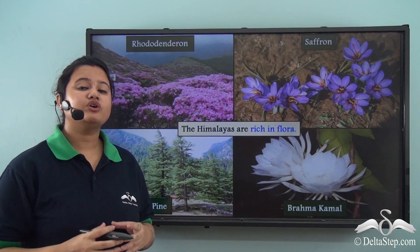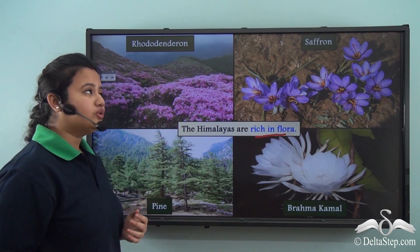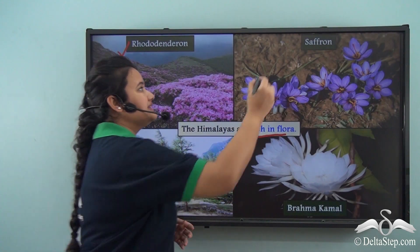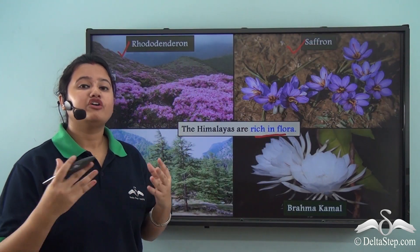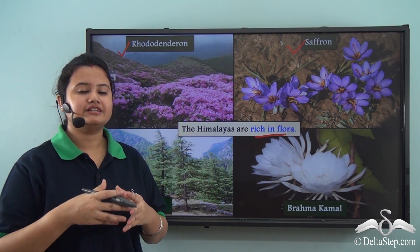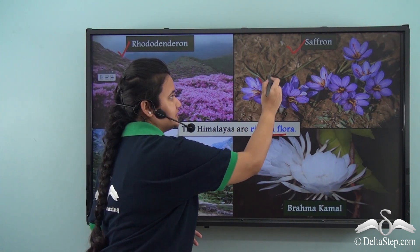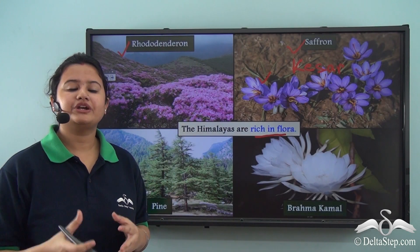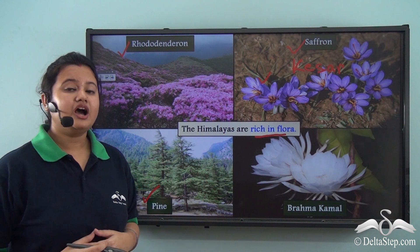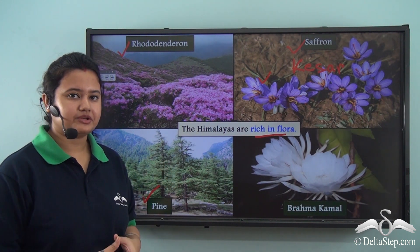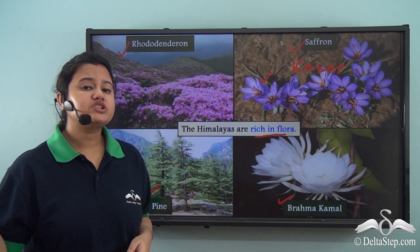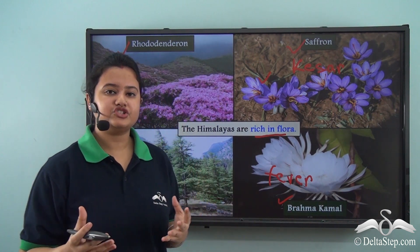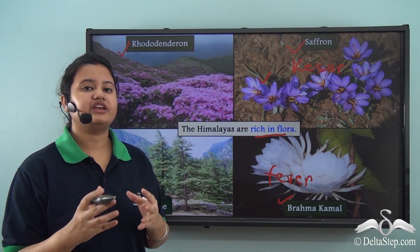The Himalayan region is also rich in flora or forest wealth. Rhododendrons are commonly found in the Himalayas, especially in the wetter parts. Saffron, widely used as a spice in Indian dishes and also known as kesar, is cultivated in the Himalayan region. Many timber-producing plants like pine and oak also grow in the Himalayan forests. Additionally, Brahma Kamal, an important medicinal plant used to treat fever, is found in the Himalayan region. Thus the Himalayas are indeed very rich in flora.